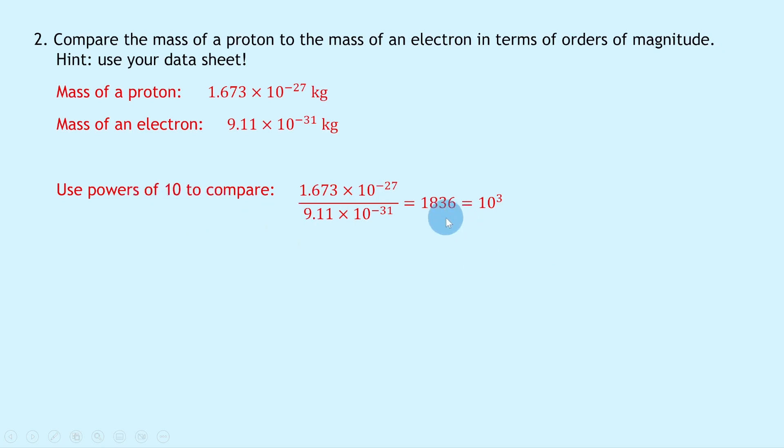Now remember, we're wanting to use powers of 10 to compare them, so we're wanting to think about rounding this number to the nearest power of 10. Hopefully you can see that this would round to the number 1000 as the nearest power of 10, because it's not big enough to go to the next power of 10, which would be 10,000. Because it's nowhere near 10,000, we can't round it up to 10,000; we would actually just round it down to 1000, as in 10 to the power of 3. So this means we have a difference of about three orders of magnitude. Therefore, the mass of a proton is three orders of magnitude greater than the mass of an electron.